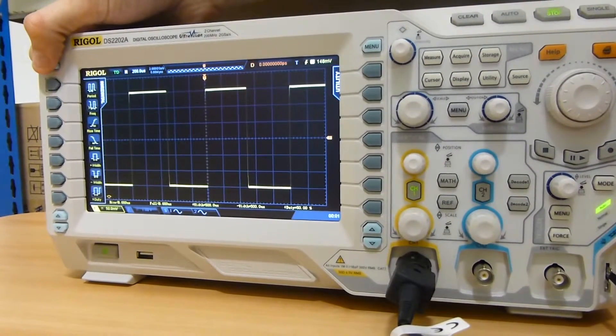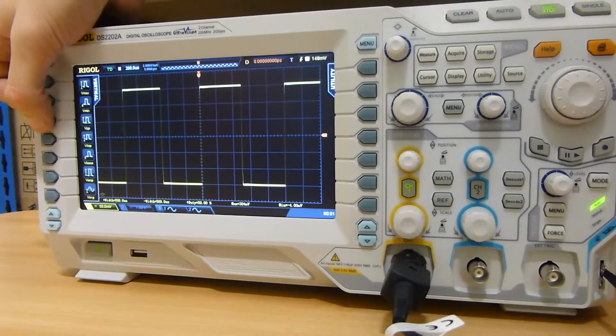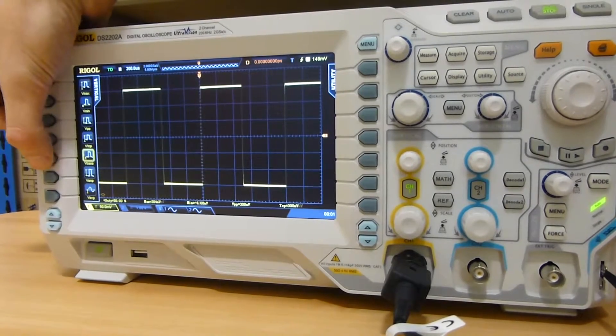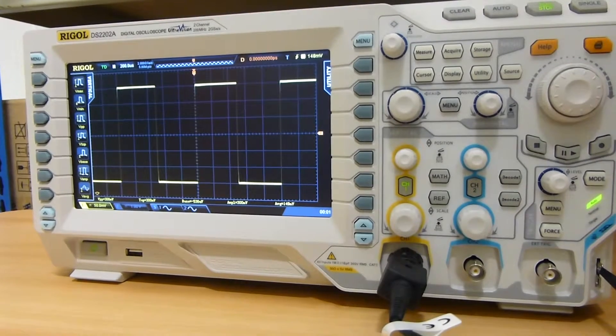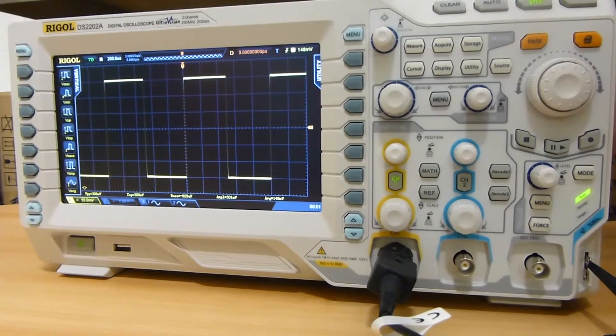Then we have the vertical menu. Moving over to the right hand side, we have the menus for measure.